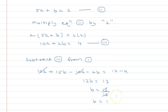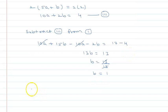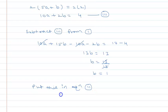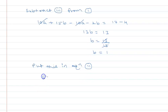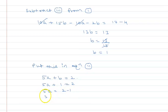Now we put b = 1 back into equation 2: 5a + b = 2. Since b = 1, we get 5a = 2 - 1 = 1, so a = 1 upon 5.